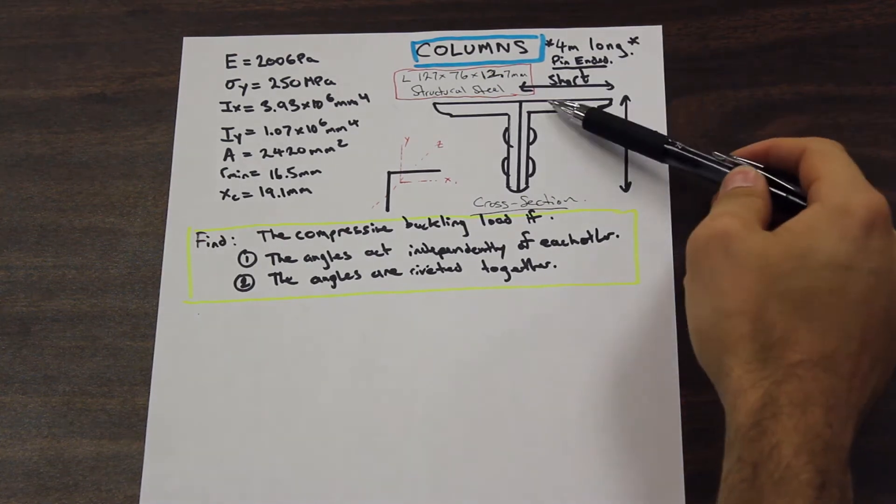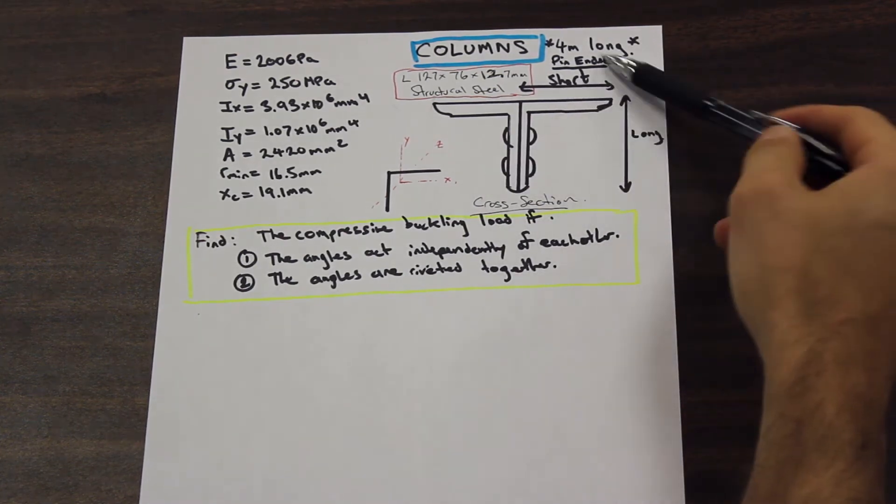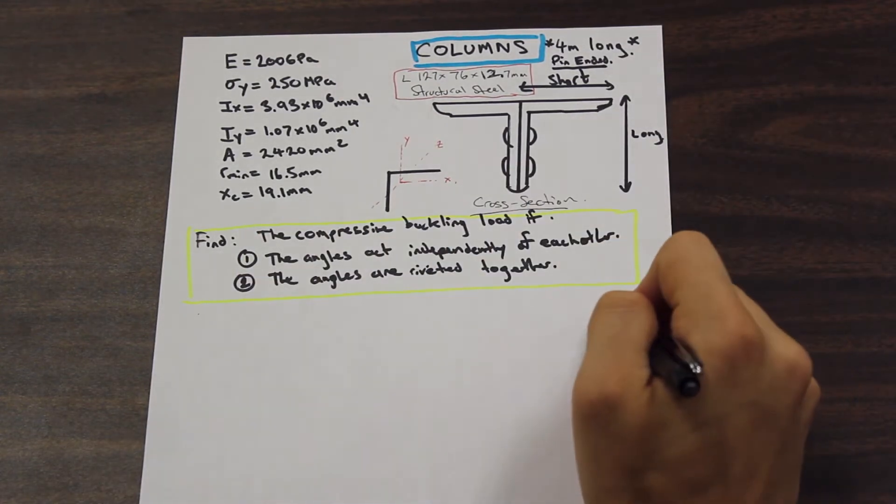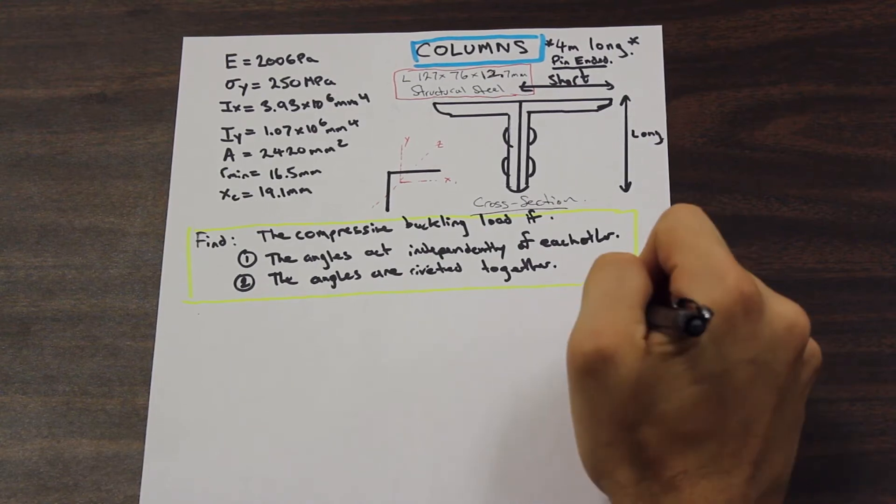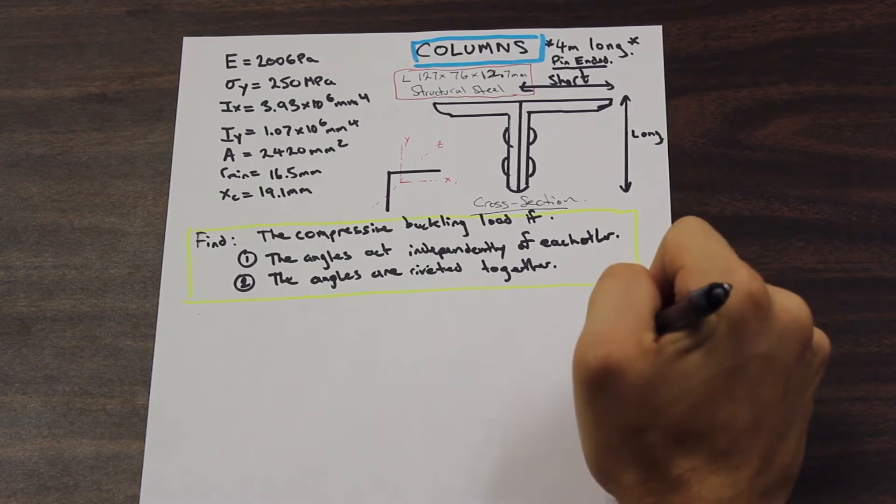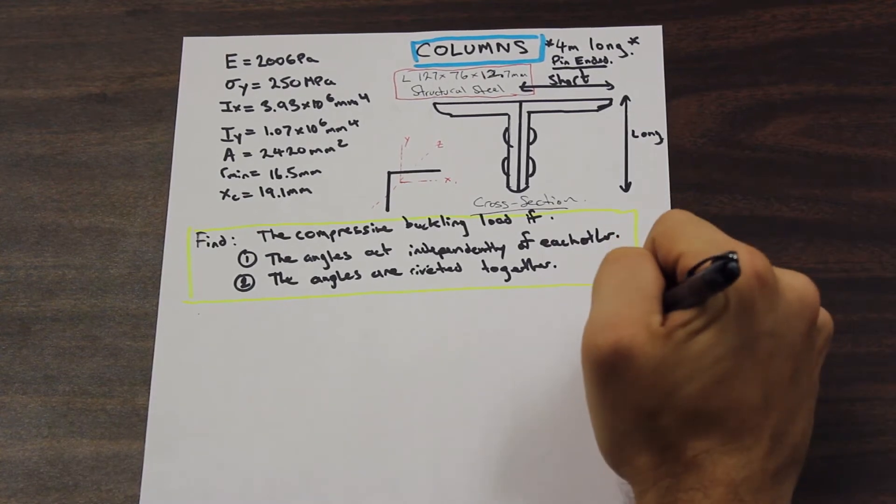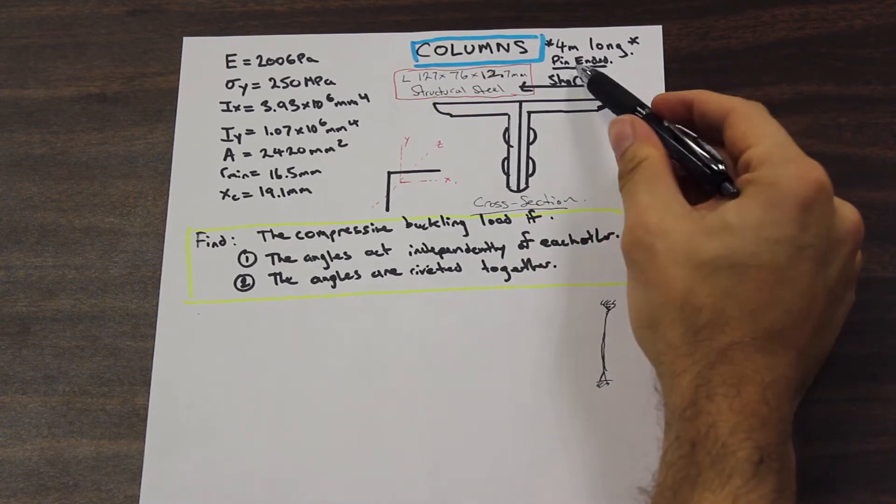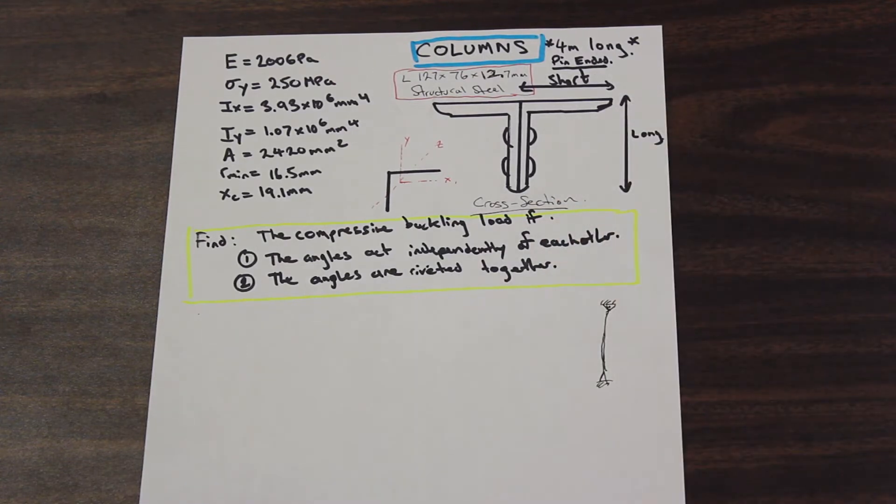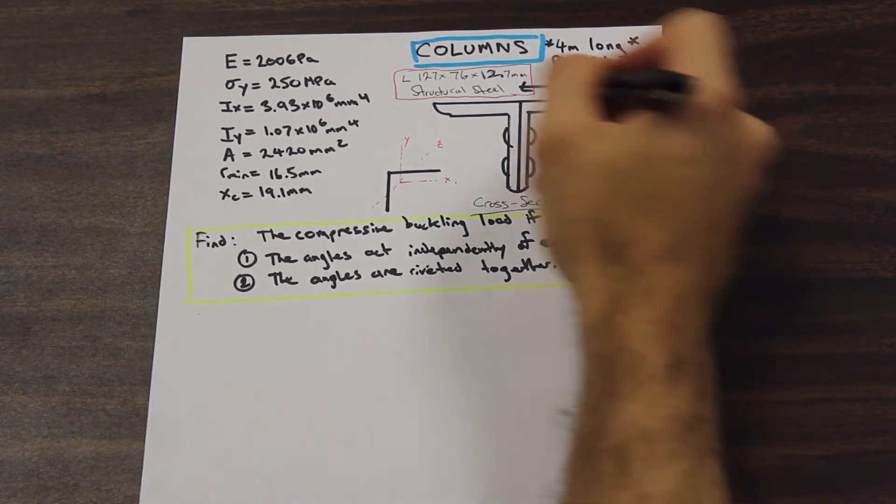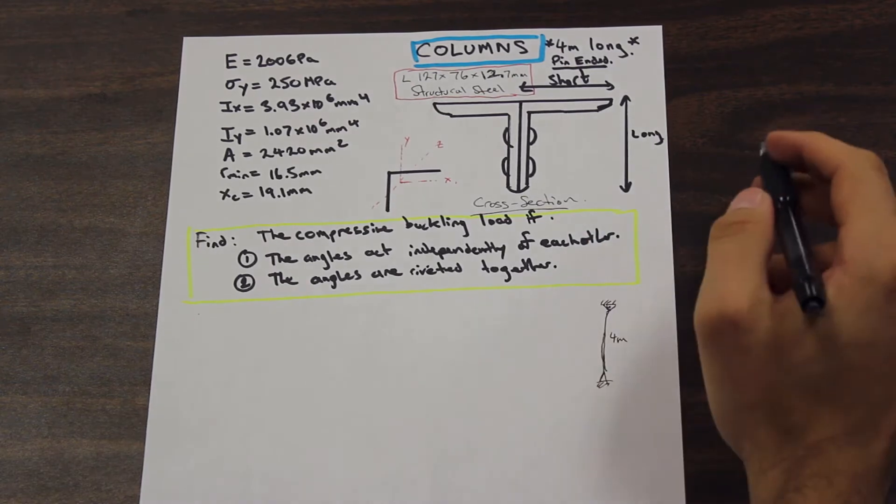Okay, so we're given in the question that this column here is four meters long, and it's pin-pin. It's a pin-pin connection. So I'm going to draw down here, we have a little picture, and we have our two pin connections, and we have our column here. So if you look at your book, I'm not going to write all these down, but you have different effective lengths of columns. So in this case, because it's pin-pin, and this is just a rule that you have to memorize, this won't usually be given to you.